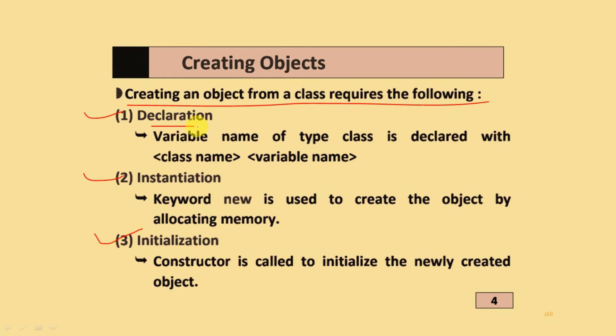In the declaration part, a variable name of type class is declared with the class name and variable name. In instantiation, you have to use the new keyword. It is used to create the objects by allocating memory. Initialization is the constructor, which is called to initialize a newly created object.